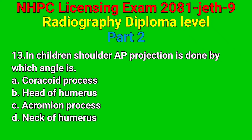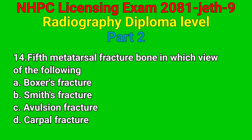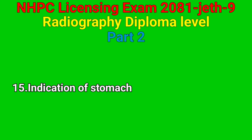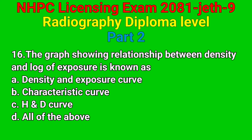Correct answer: option A — blood in air. Question number thirteen: in children, shoulder AP projection is drawn by which angle? Correct answer: option A — coracoid process. Question number fourteen: fifth metatarsal fracture bone — which view? Correct answer: option A — boxer's fracture. Question number fifteen: indication of stomach — option A, B, C, D.